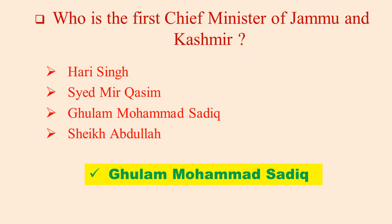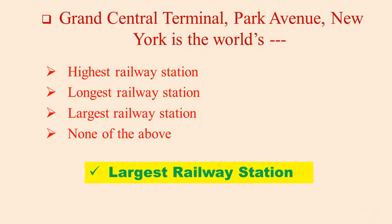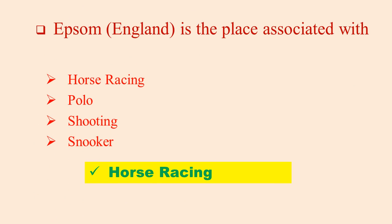Who is the first Chief Minister of Jammu and Kashmir? Gulaam Mohammad Sadiq. Grand Central Terminal, Park Avenue, New York is the world's largest railway station. Epsom, England is the place associated with horse racing.